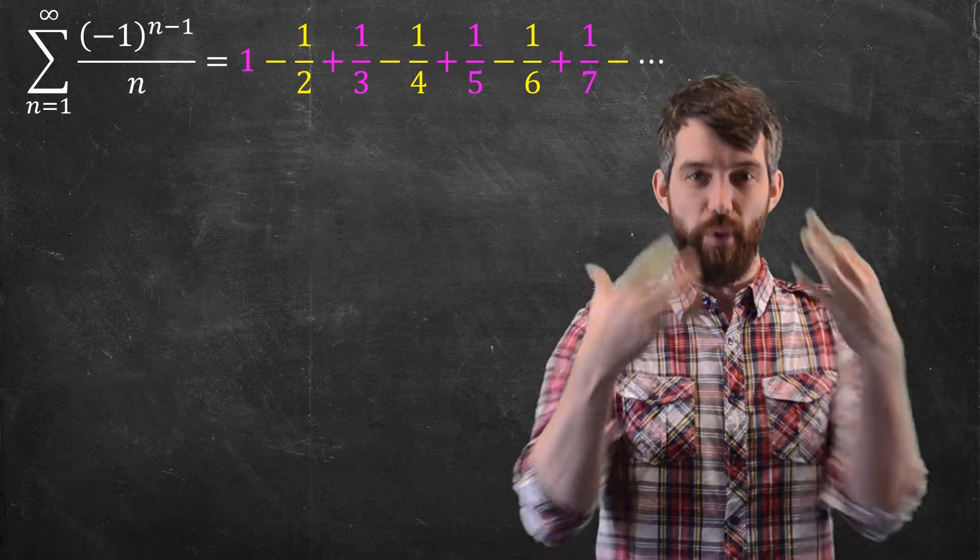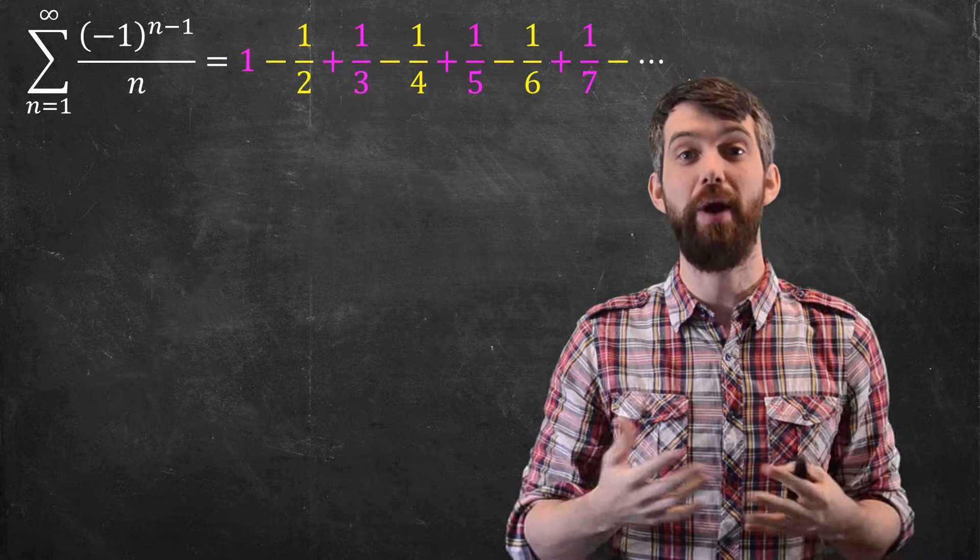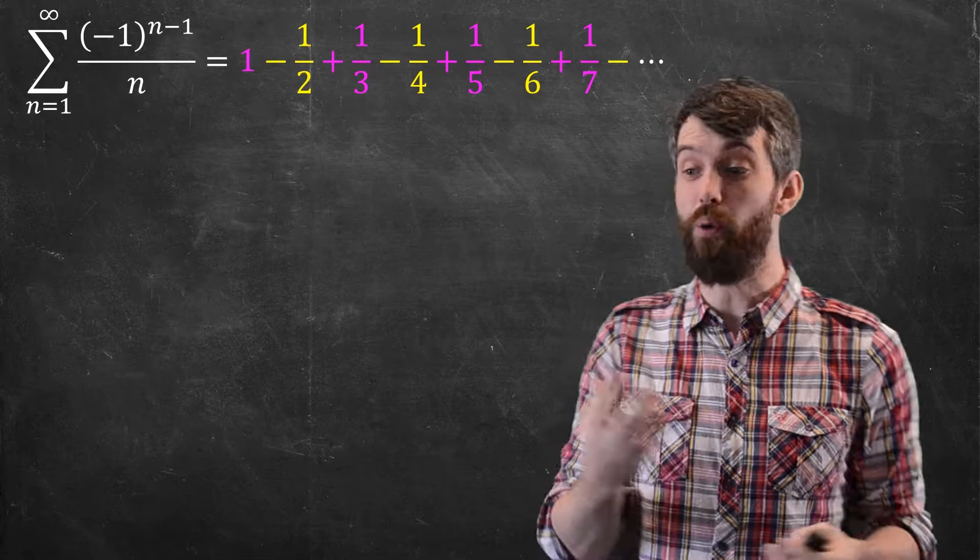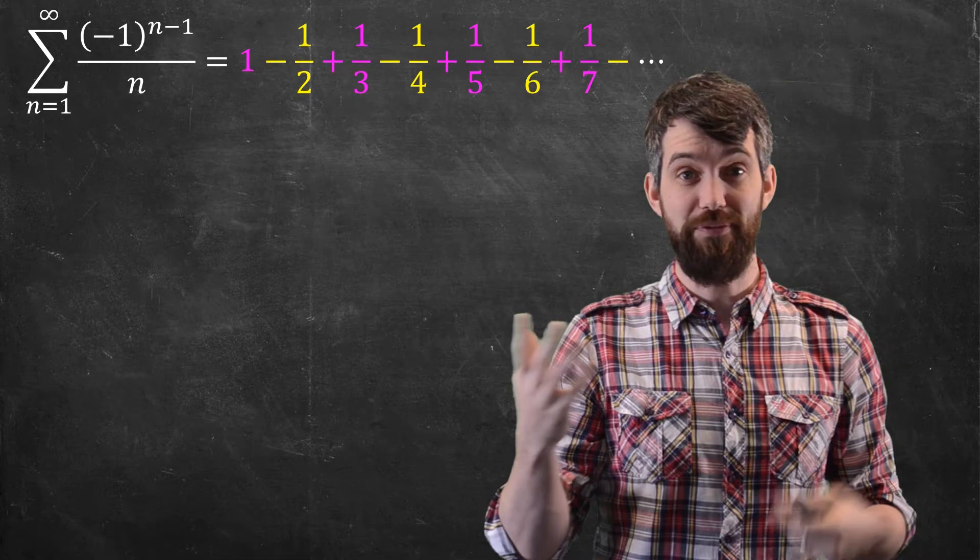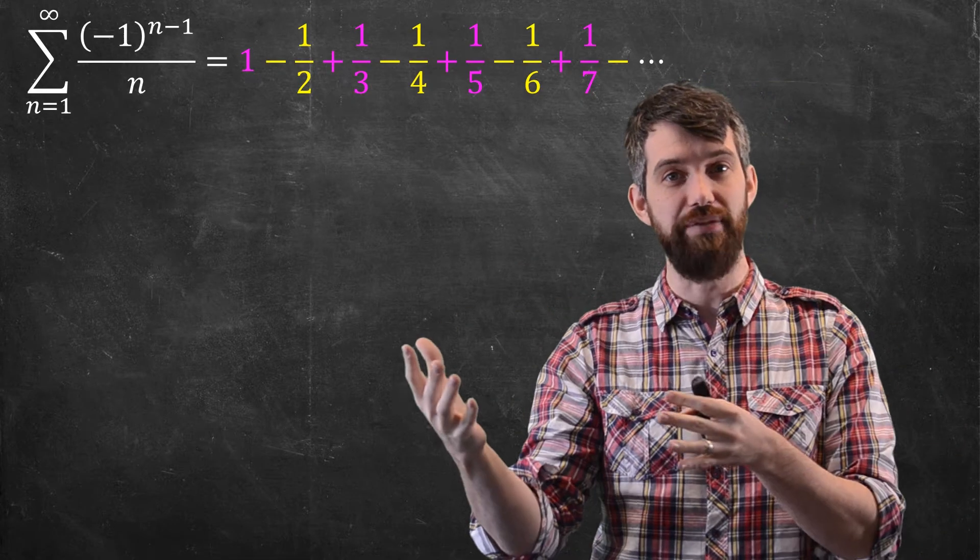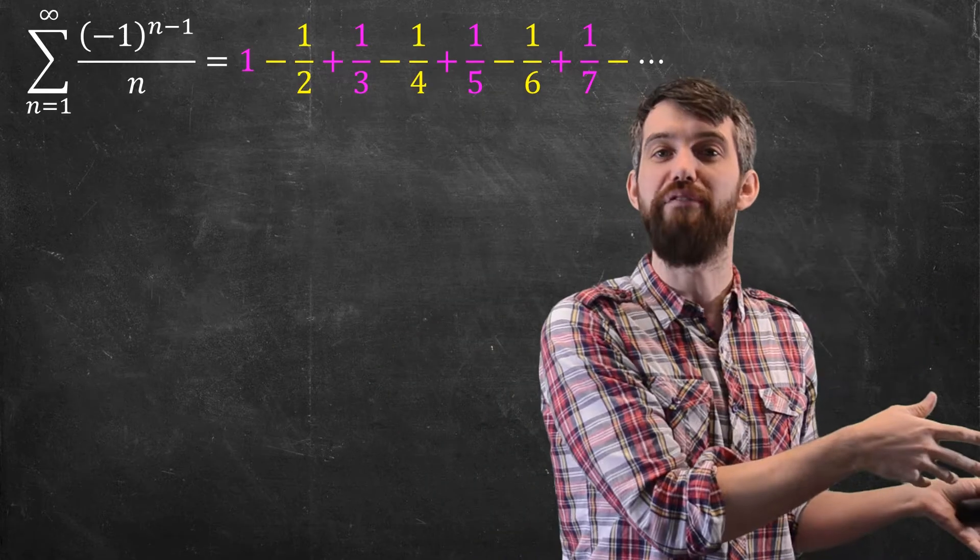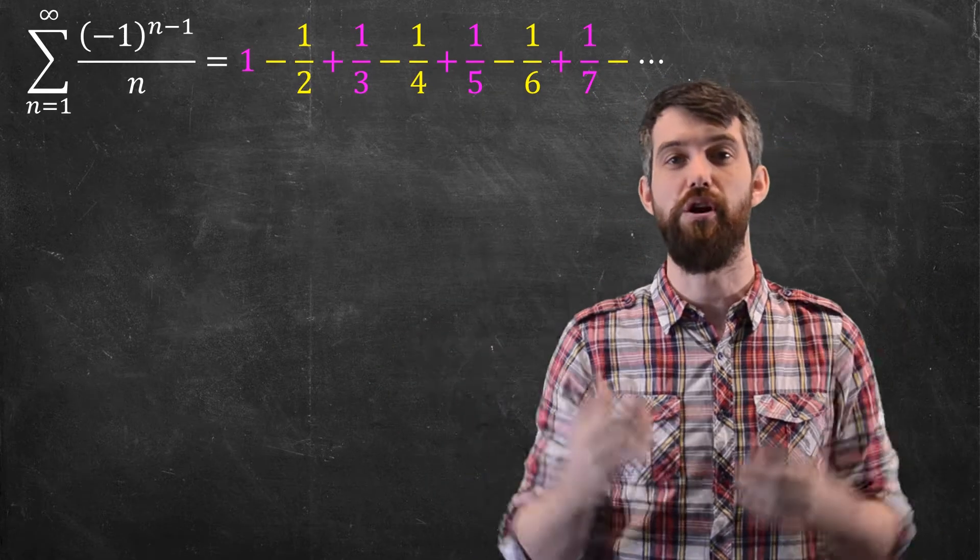Now, while the original harmonic series, 1/n, diverged, there's an open question about this one. Because if you think about it, all those negatives in a sense cancel off versus adding to a larger total.